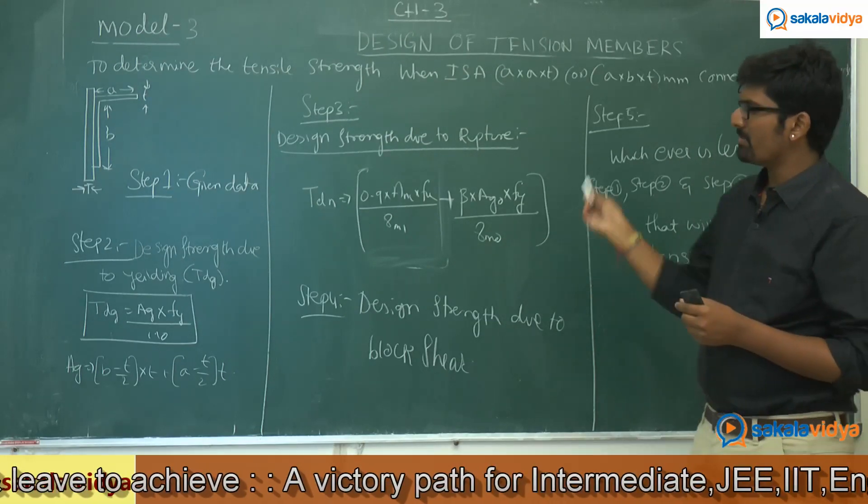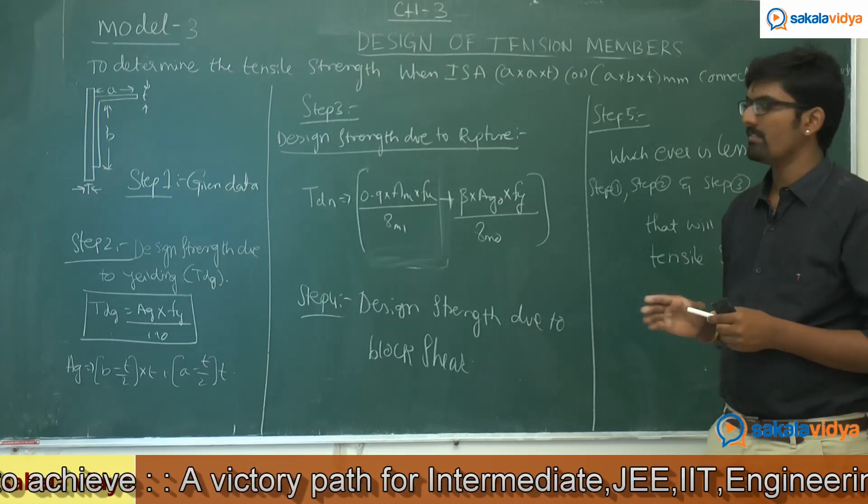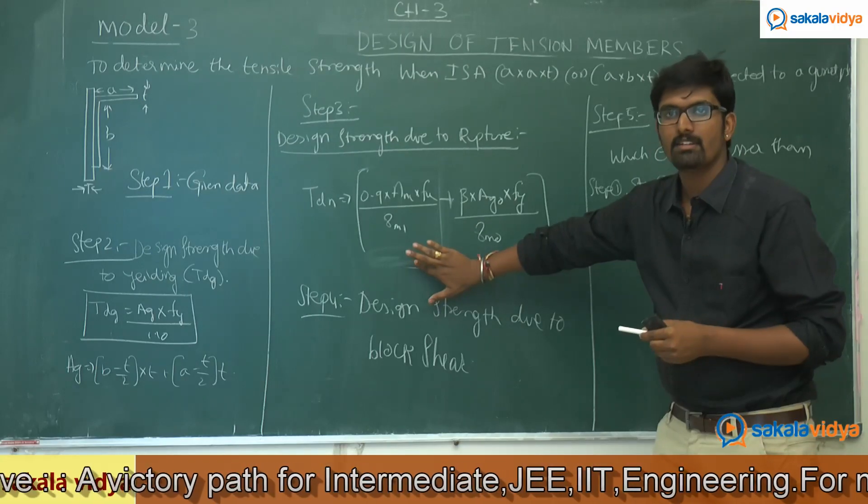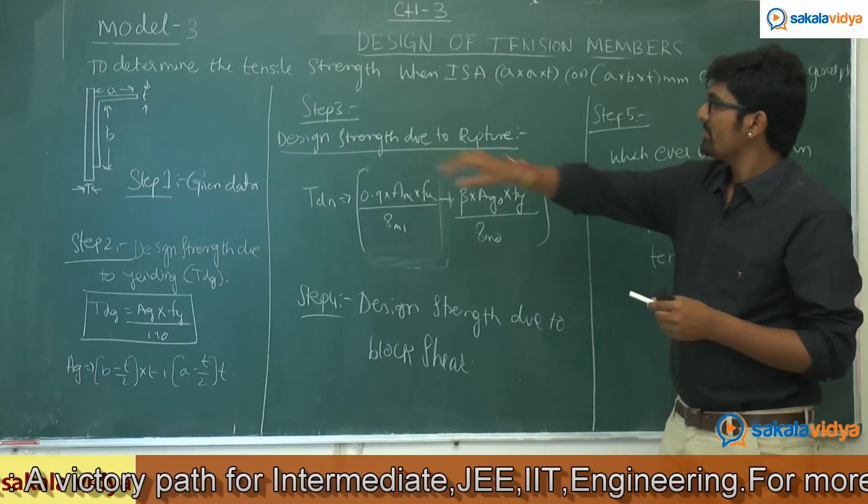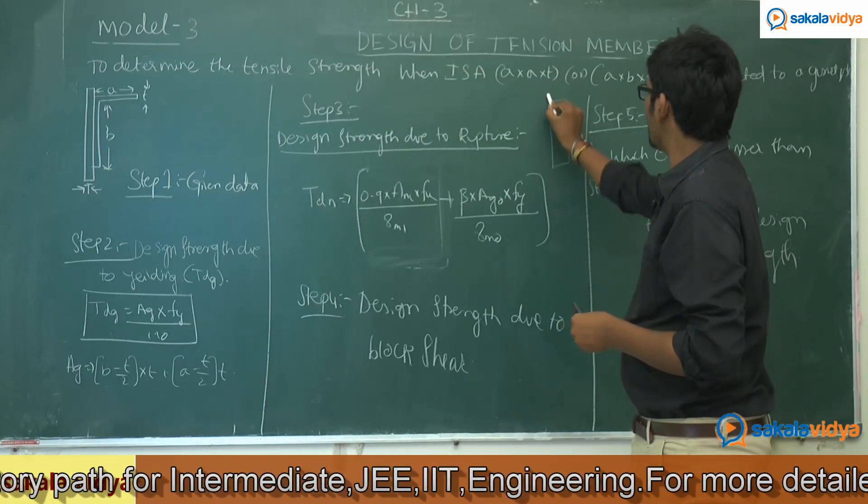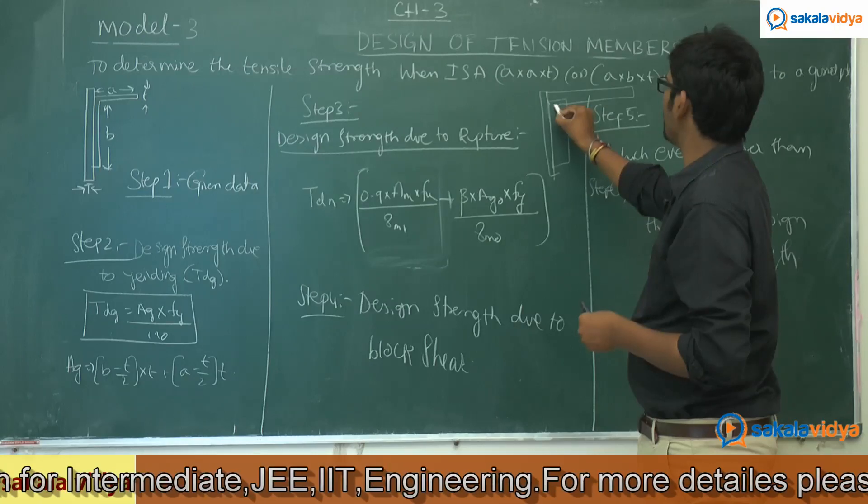So what is the difference between the previous net area and this design strength due to rupture of critical section? This formula is only for flat rectangular plates. Because in angle section, one leg is connected to a gusset plate, which is the connected leg, and we are having one more leg which is free, which is left free.